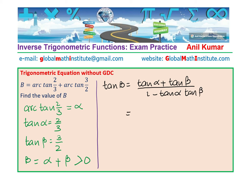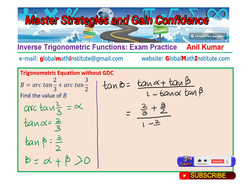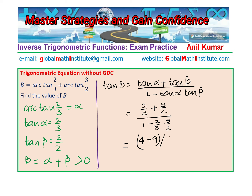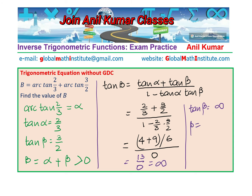Substituting: tan α is 2/3, plus 3/2, over 1 minus (2/3 times 3/2). The numerator gives 4 plus 9 over 6, which is 13/6. The denominator gives 1 minus 1, which equals 0. So we have 13 over 0, which is infinitely large. Since tan B is undefined (infinite), B equals π/2. That is how we answer this particular question.